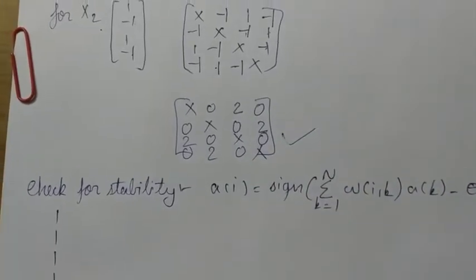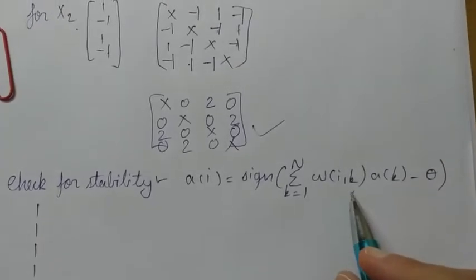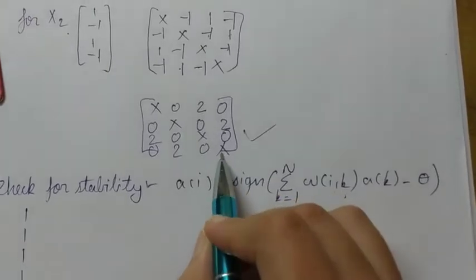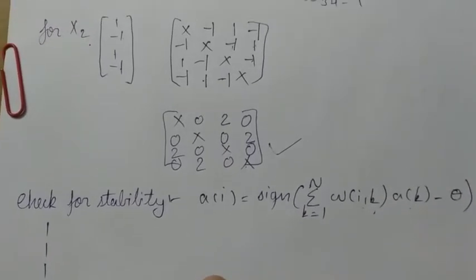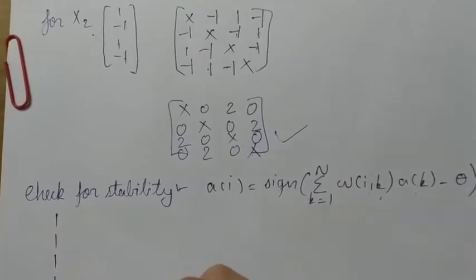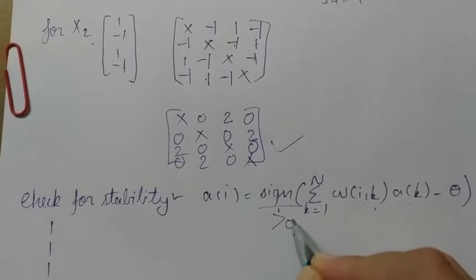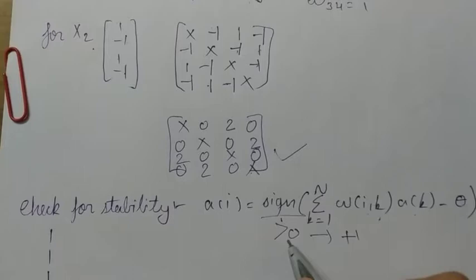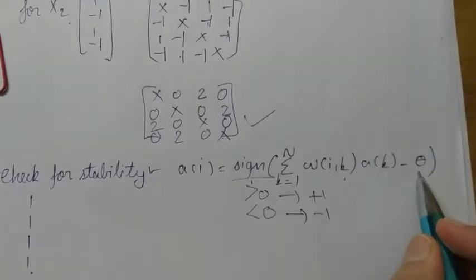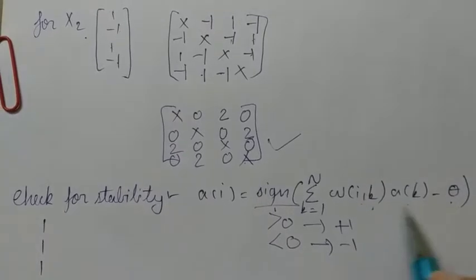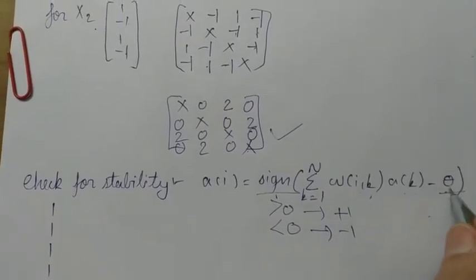Stability checking is done using the given equation. The value of W_ik comes from the weight matrix, and a_k is the value from the activation matrix for which we are checking stability. The sign function means: if we obtain any value greater than 0 it is considered as plus 1, and if less than 0 it is considered as minus 1. Theta is the threshold value subtracted after multiplying. For simplicity, we consider theta equals 0.